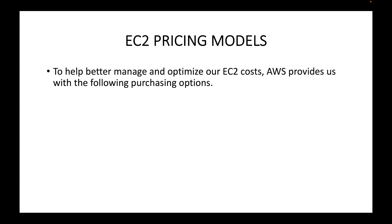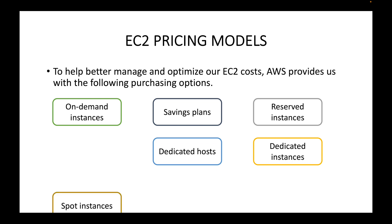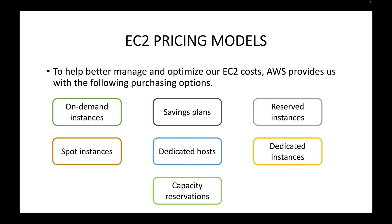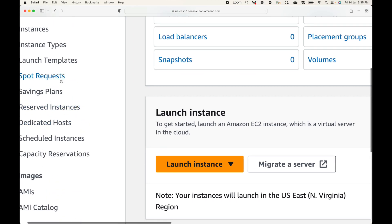To help better manage and optimize our EC2 cost, AWS provides different purchasing options. These are: on-demand, savings plans, reserved instances, dedicated instances, dedicated hosts, spot instances, and capacity reservations. In the console on the left-hand side you can see options including spot requests, savings plans, reserved instances, dedicated instances, scheduled instances, and capacity reservation.